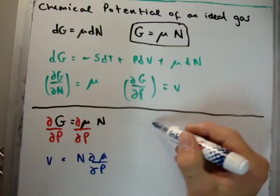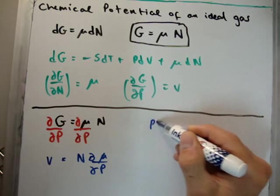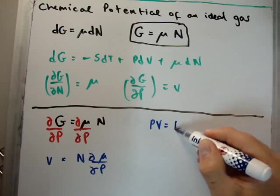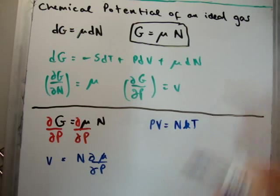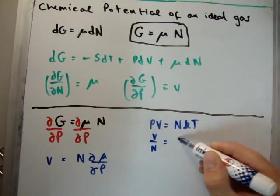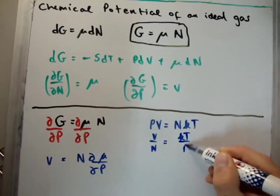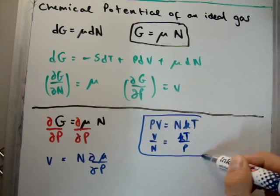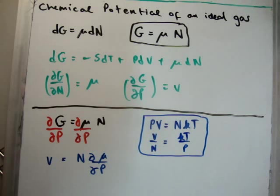The next thing we need to know is that the ideal gas is that PV is equal to N K T, or V over N is equal to K times T over P. So that's our little aside, or how we get from what we have at the moment to the ideal gas law.